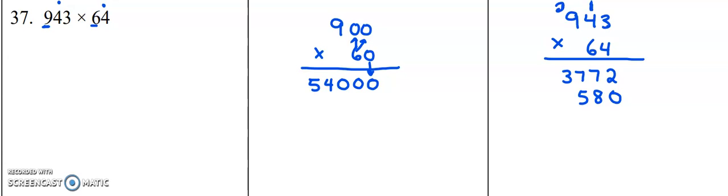Carry the 2. 6 times 9 is 54, plus 2 is 56. 56,580 for your second row.